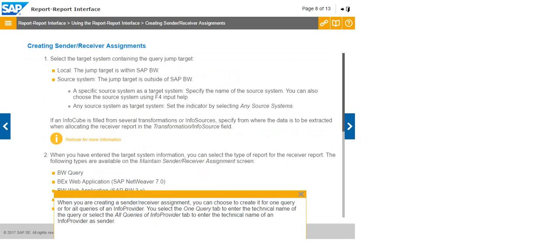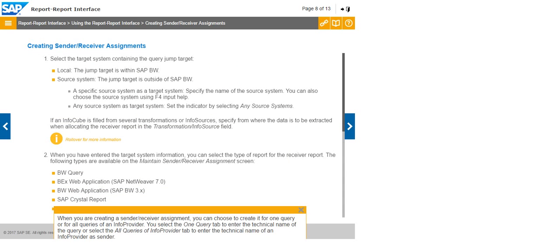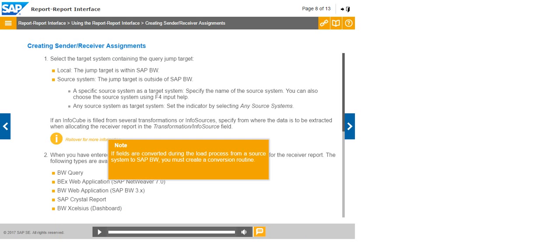When you are creating a sender or receiver assignment, you can choose to create it for one query or for all queries of an InfoProvider. You select the ONE QUERY tab to enter the technical name of the query, or select the ALL QUERIES OF INFO PROVIDER tab to enter the technical name of an InfoProvider as sender.